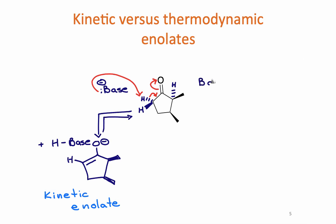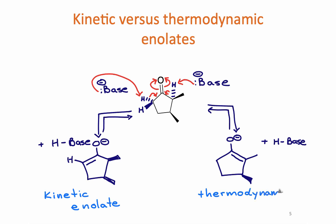The other possibility would be for the base to remove the most sterically hindered proton, as I'm showing with the red arrow. Because removal of that more substituted proton gives a more stable alkene, this is the more stable enolate of the two. So it's known as the thermodynamic enolate.